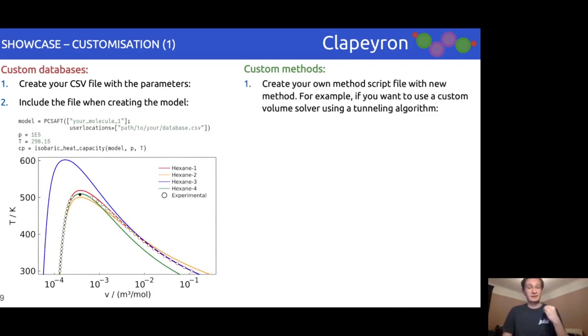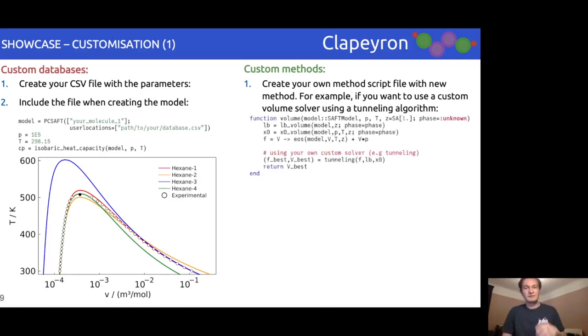The next aspect we allow for customization of is the methods and algorithms used. This is the first instance in which we use Julia's multi-dispatch features. Various algorithms have and are being developed to solve various important problems for thermodynamic equations of state. As such, if you'd like to test out your own method, simply define it.